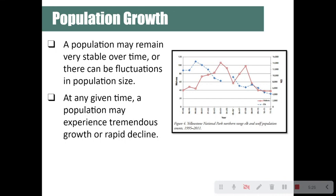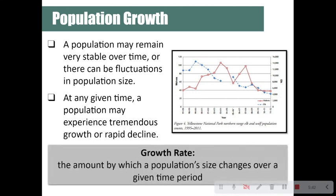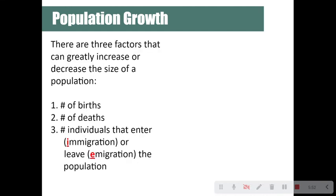A population may remain stable over time, or there can be fluctuations in population size — at any given time a population may experience tremendous growth or rapid decline. Growth rate is the amount by which a population size changes over a given period of time. Three factors can greatly increase or decrease population size: the number of births, the number of deaths, and the number of individuals that enter through immigration or leave through emigration.